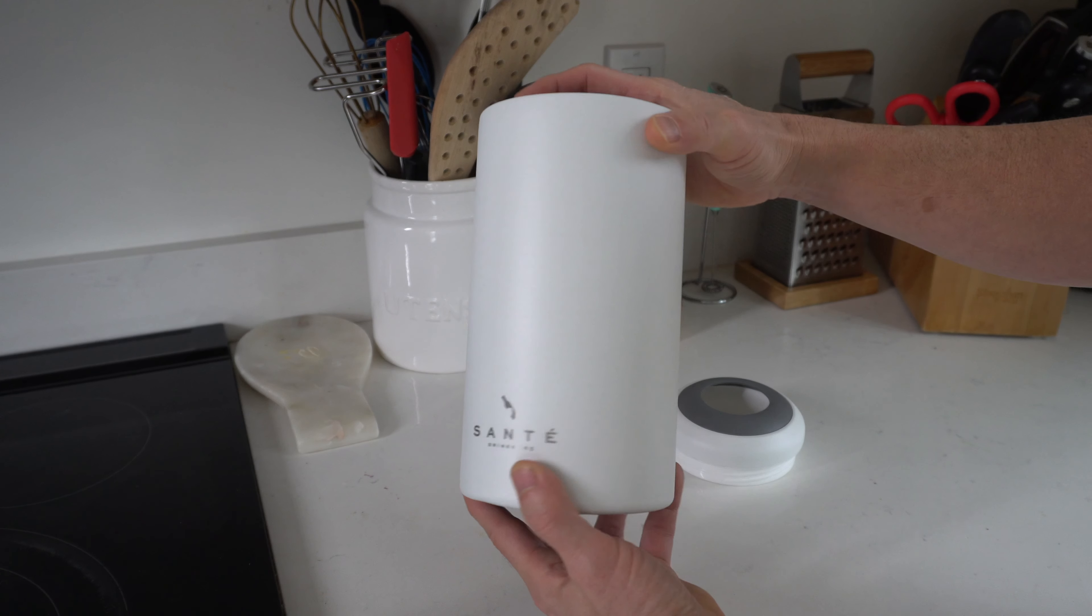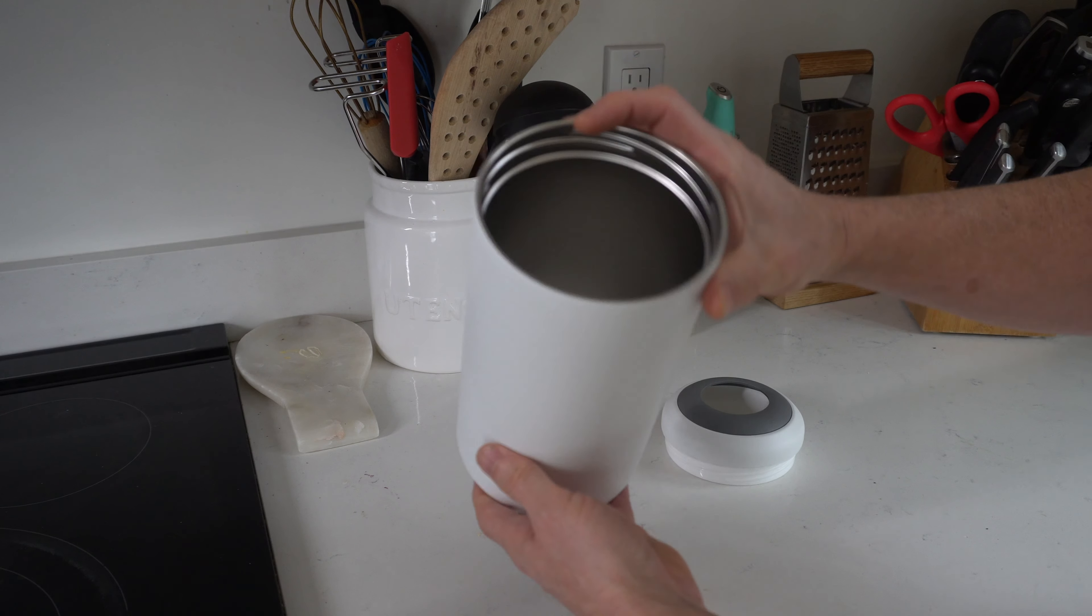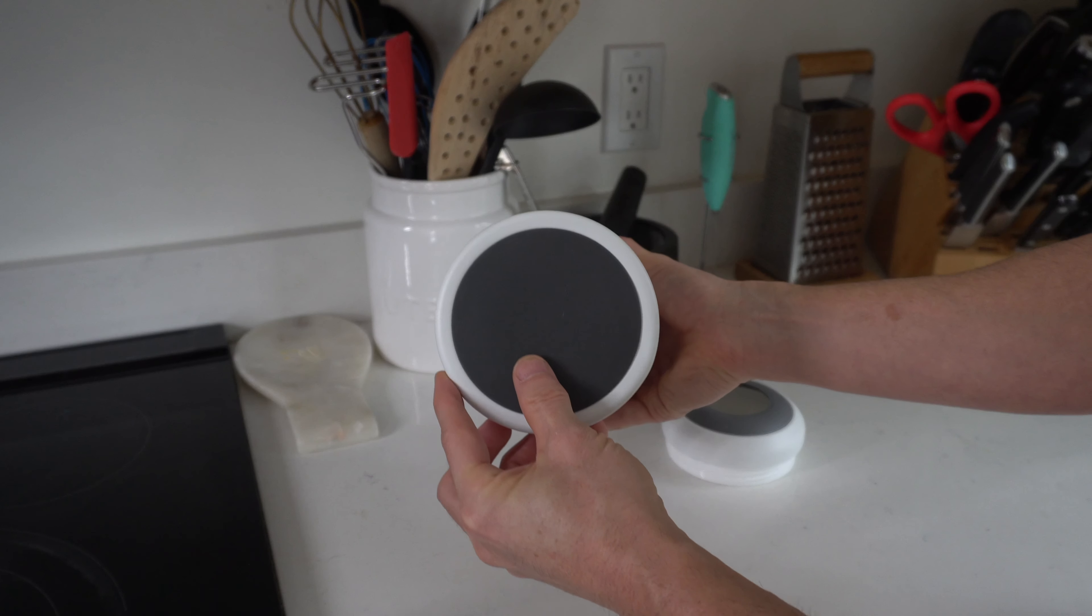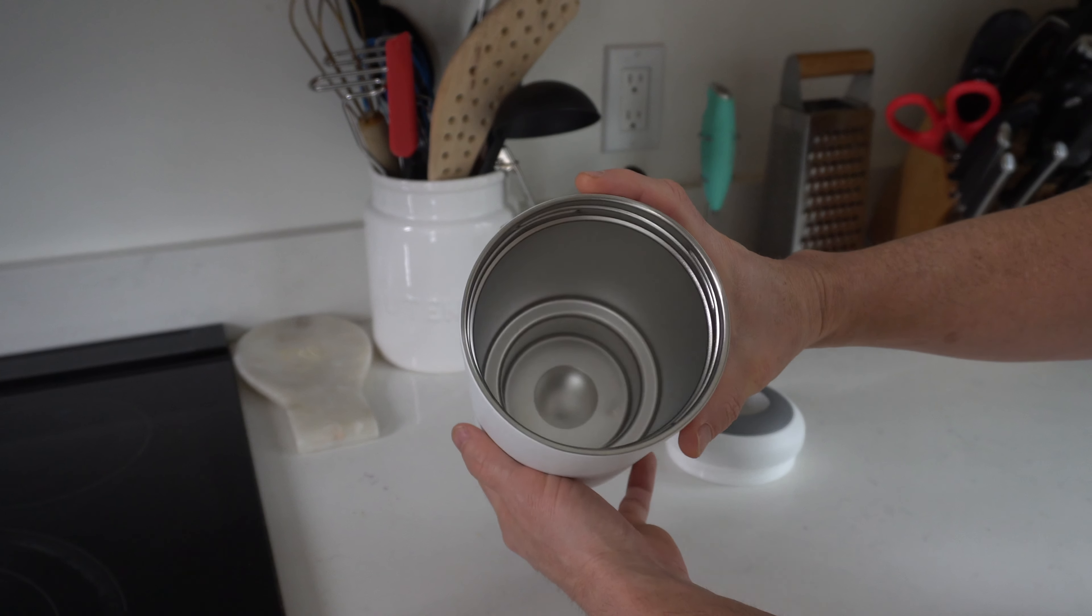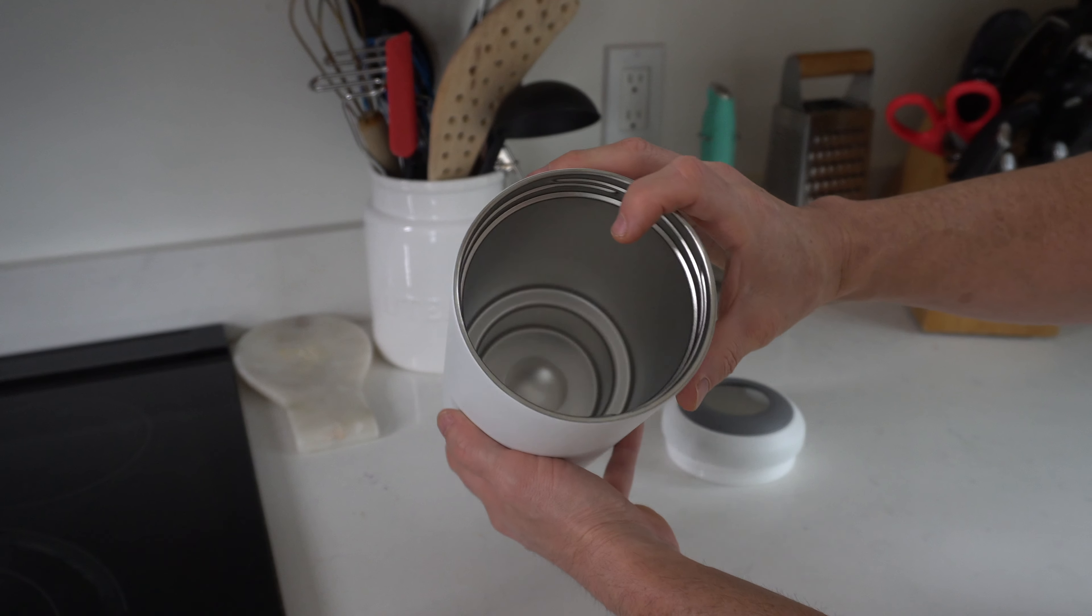Now the wine chiller, this thing looks awesome. Super sleek with this white color, but they do have different color options. On the very bottom here we've got a non-slip pad, and then on the inside you can see right here double wall vacuum insulated stainless steel.